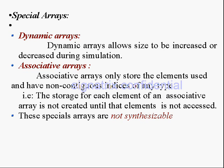Then come to associative arrays. Associative arrays only store the elements used and have non-contiguous indices of any type. Non-contiguous means: in memory, for a packed array it will arrange in a contiguous manner — one, two, like that. But for an unpacked array it will store something in one location in memory and something else in another location. The storage for each element of an associative array is not created until that element is accessed.